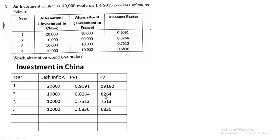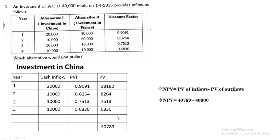Totalling the four present values gives 40,789. Now applying the NPV formula — NPV equals PV of inflow minus PV of outflow — inflow PV is 40,789 and outflow is 40,000, so NPV = 40,789 − 40,000 = 789. That is the net present value for investment in China. Now let us see what happens if the investment is made in France.